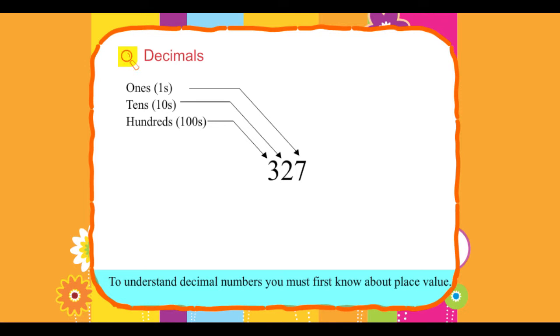To understand decimal numbers, you must first know about place value. When we write numbers, the position or place of each number is important.